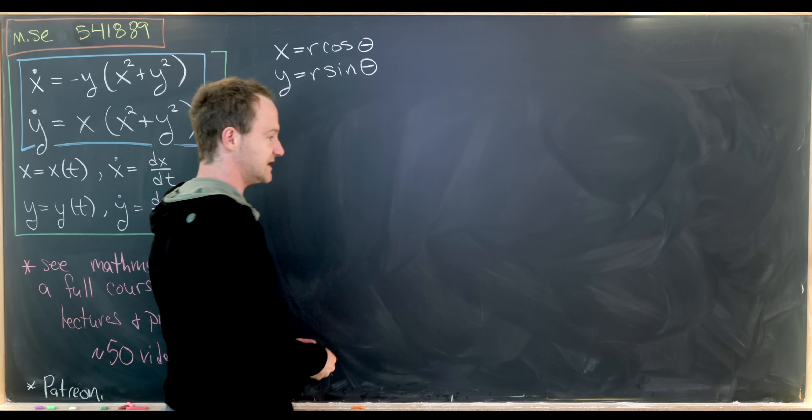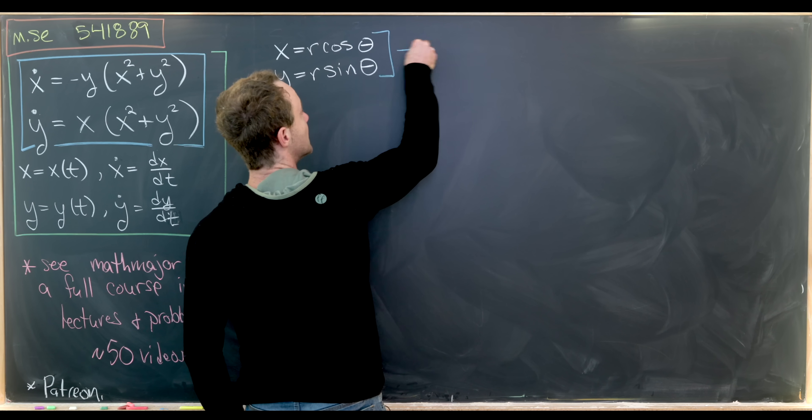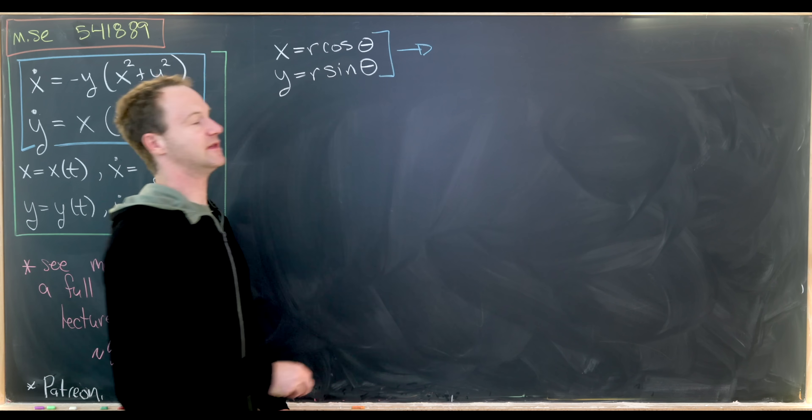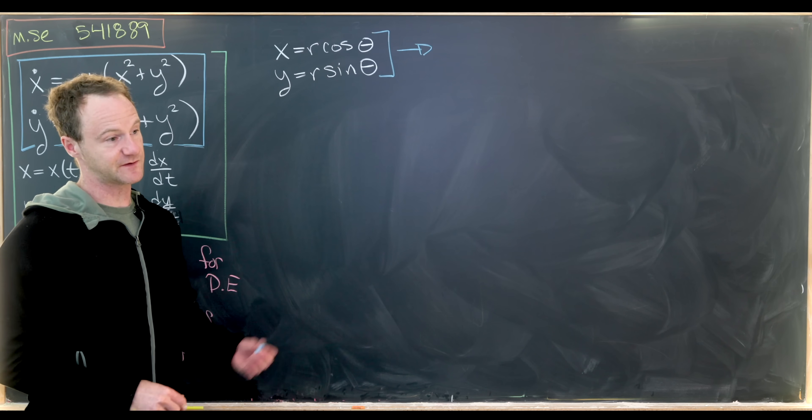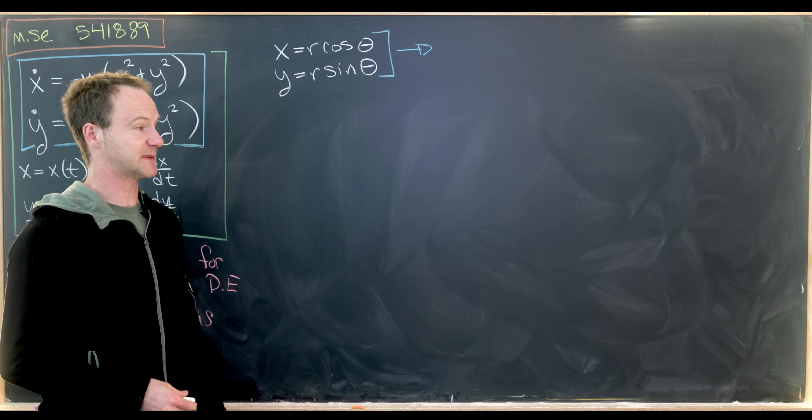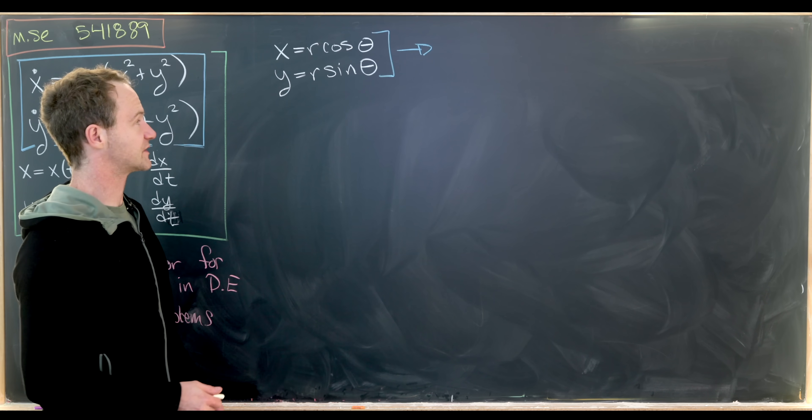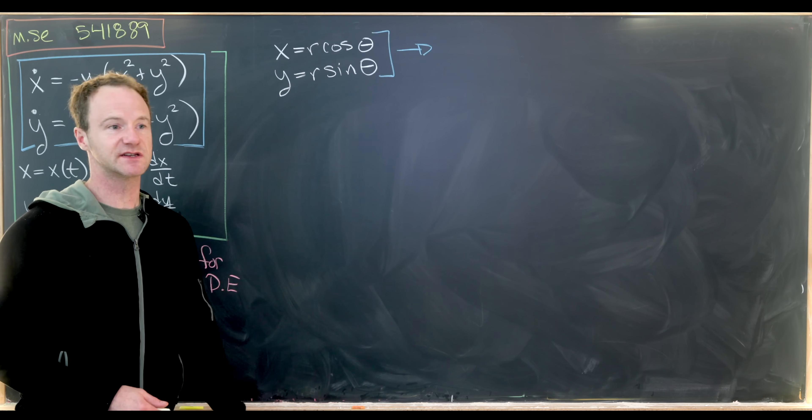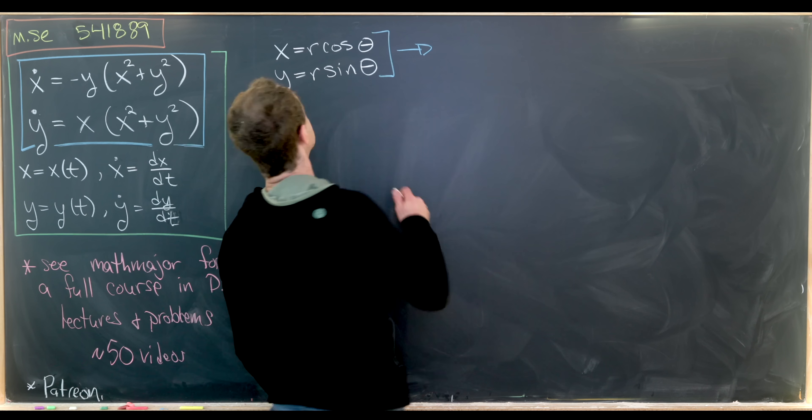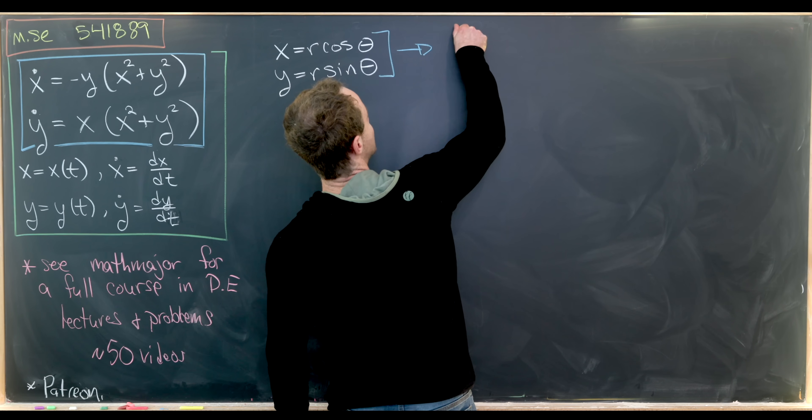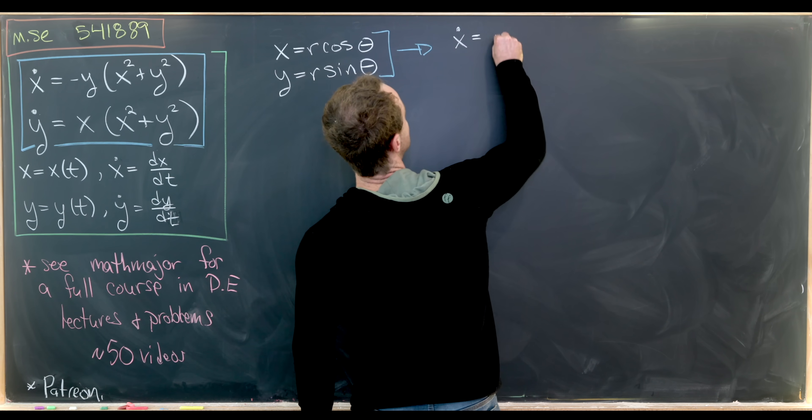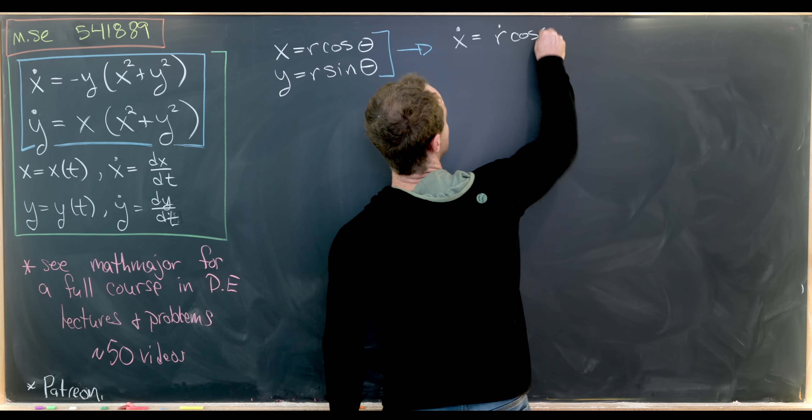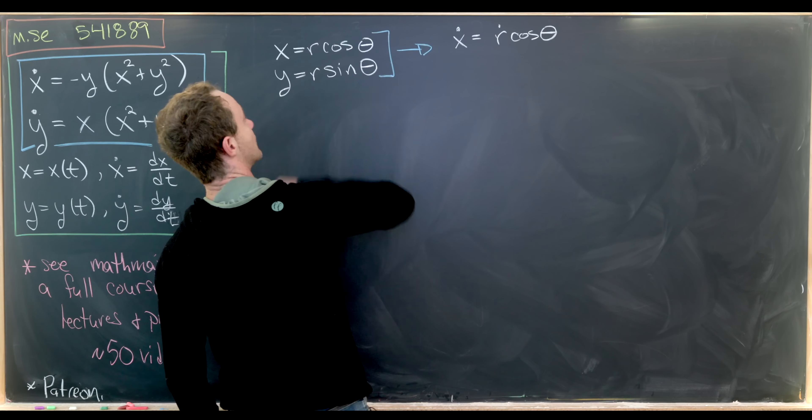And although we won't use this explicitly, it's a nice exercise in the product rule and the chain rule to find the derivative of x with respect to t and the derivative of y with respect to t in terms of these new polar functions. And in fact, what we have is x dot is equal to r dot times cosine θ,